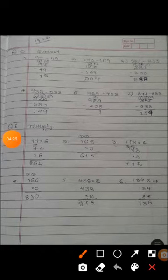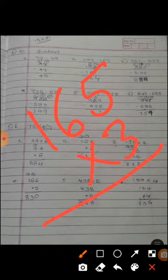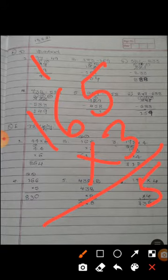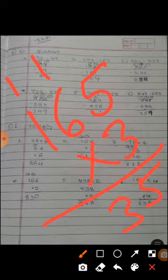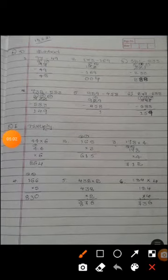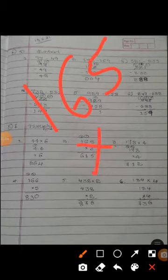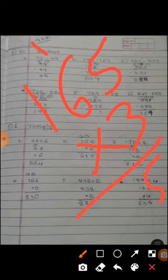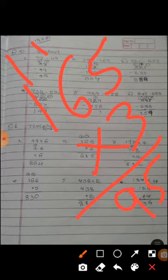Second one, 165 can be multiplied with 3. 5 threes are 15. 6 threes are 18, plus 1 it become 19. 3 ones are 3, plus 1 it become 4. Sorry, it become wrong. Once again I will do. 165 can multiply by 3. 5 threes are 15. 6 threes are 18, plus 1 it become 19. 3 ones are 3 plus 1 it become 4. 495 is the answer.